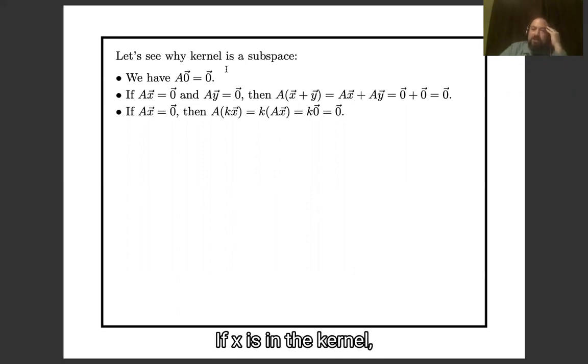If x is in the kernel, so Ax is zero, and y is in the kernel, so Ay is zero, then A times (x plus y) is Ax plus Ay is zero plus zero, which is zero.